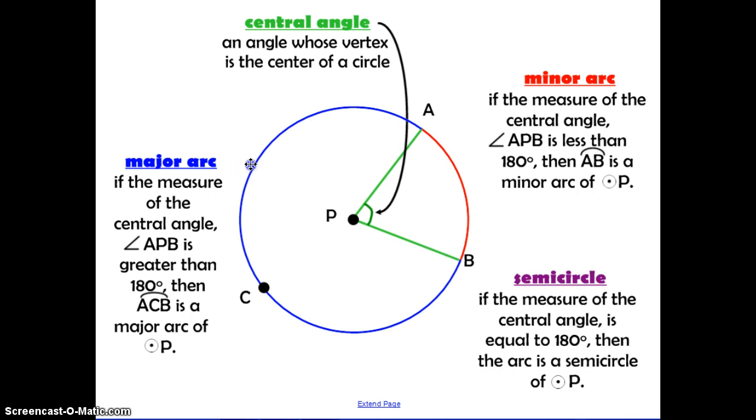A major arc is an arc that has a central angle that is greater than 180 degrees. So this angle that goes all the way around point P this way, this is greater than 180 degrees. So major arc A, C, B is how you refer to it.